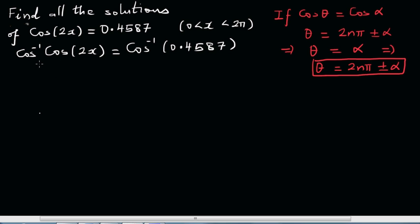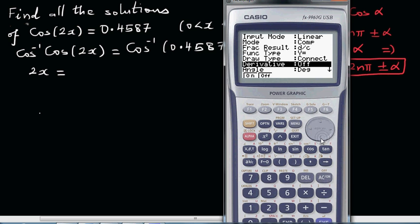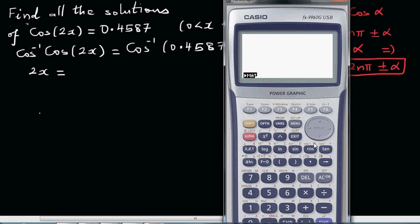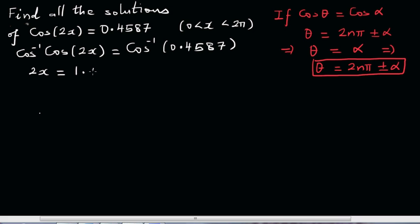Cos inverse and cos cancel each other out. So 2x equals cos inverse of this. First I need to check my setting whether it's in radians or degrees. It's in degrees, so I'll change this into radians. Let me go shift cos bracket, cos inverse of 0.4587. Close the bracket, equal. This is 1.0942, rounding to 4 decimal places, 1.0943.